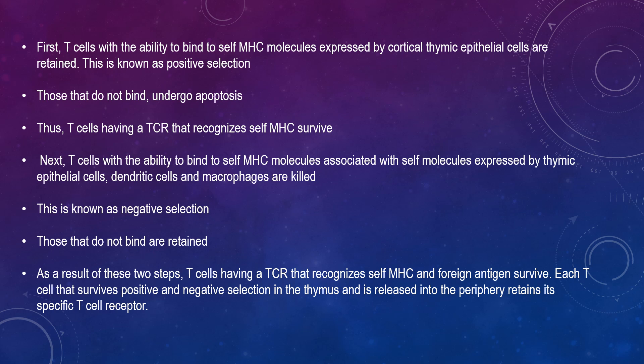The process occurs first by T cells binding with their ability to bind to self-MHC molecules expressed by cortical thymic epithelial cells. This is known as positive selection. Those that do not bind undergo apoptosis. Therefore, T cells having a TCR that recognises self-MHC survive.